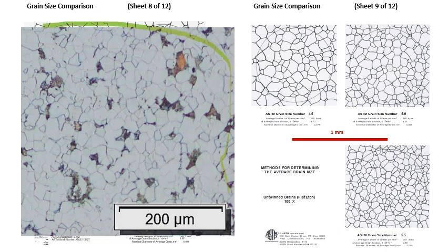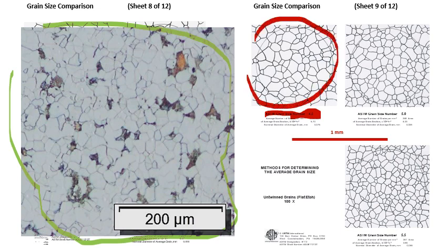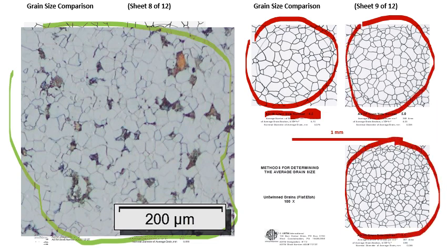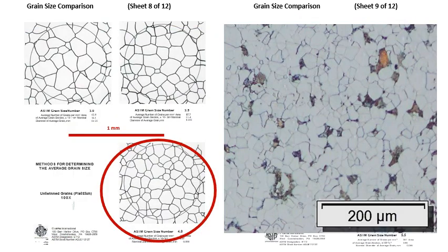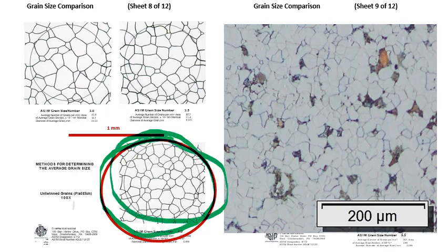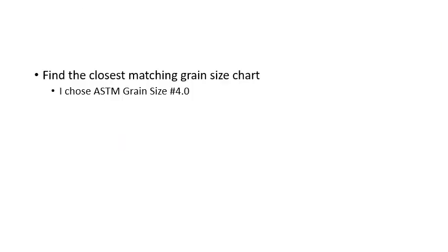Moving the image to look at higher grain size numbers, which implies smaller grains: ASTM grain size 4.5 actually looks smaller than the grains in my image. Similarly, 5.0 and 5.5 look much smaller than the grains in our image. Going back, ASTM grain size 4.0 looks fairly appropriate and matches closely to the grains in our image. We therefore choose ASTM grain size 4.0 as the closest matching grain size from the charts.